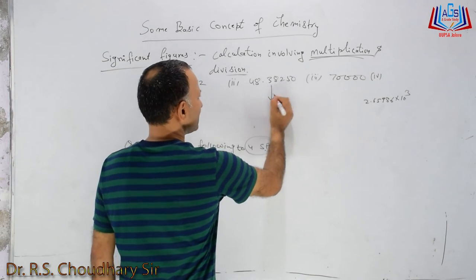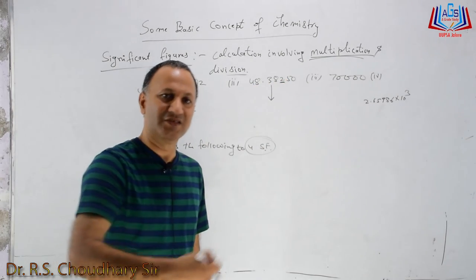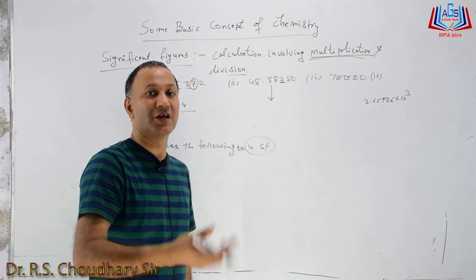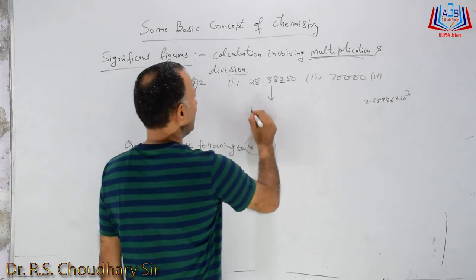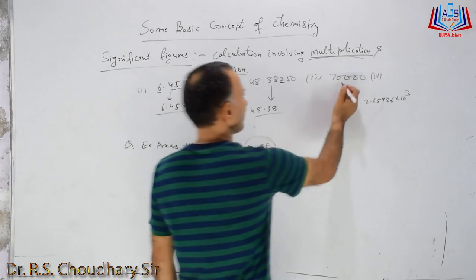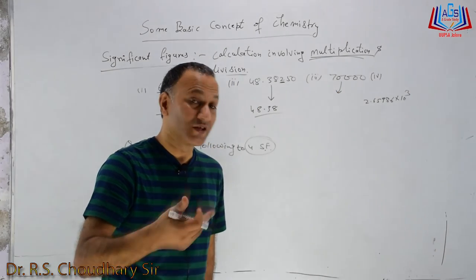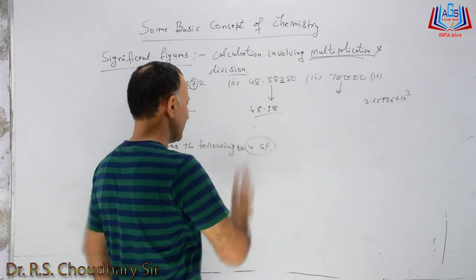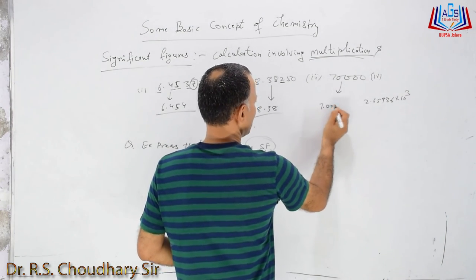Second: 48.38250. We take 4 significant figures: 1, 2, 3, 4 — that is 48.38. The next digit is 2, which is less than 5, so we leave it — no change. Our answer is 48.38.